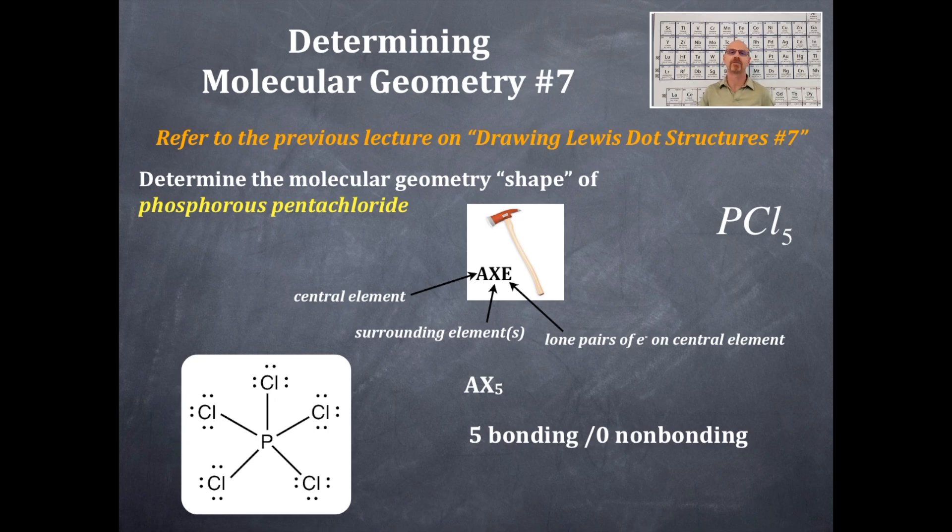Now, there are plenty of lone pairs of electrons around the chlorines, but that doesn't matter for determining the molecular shape.